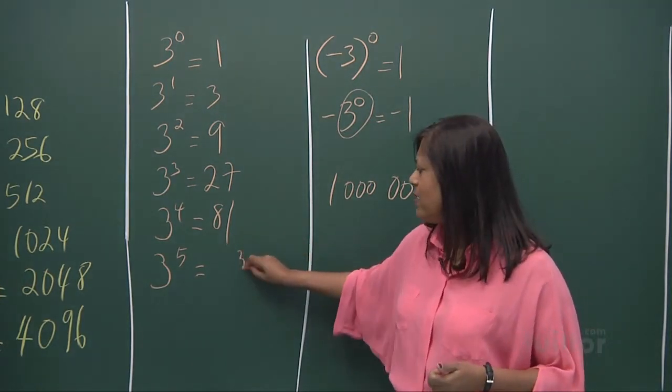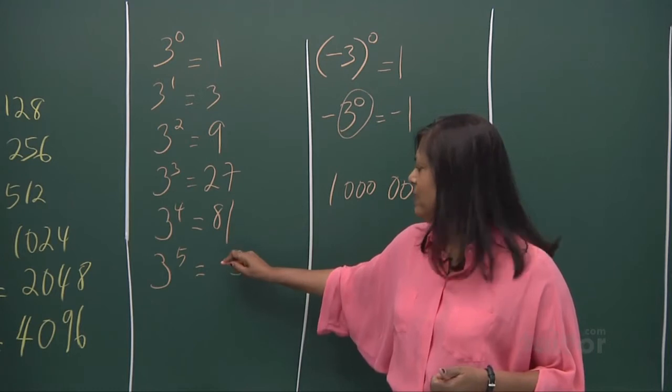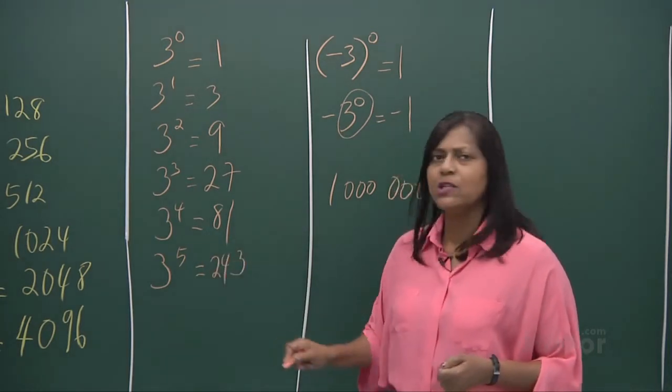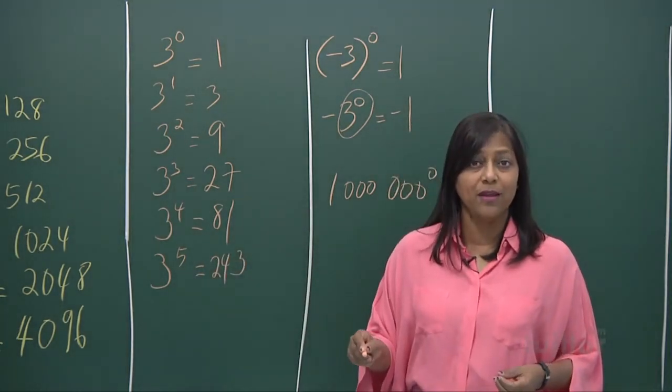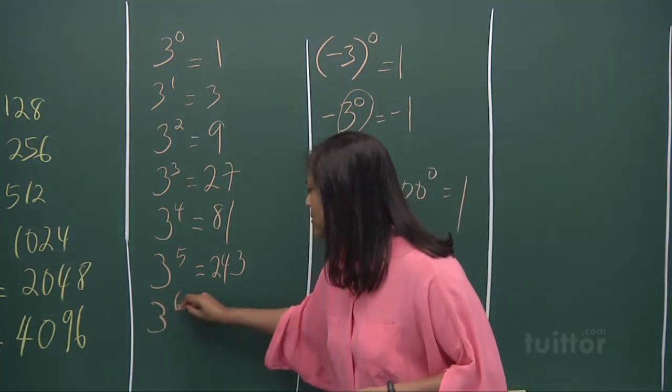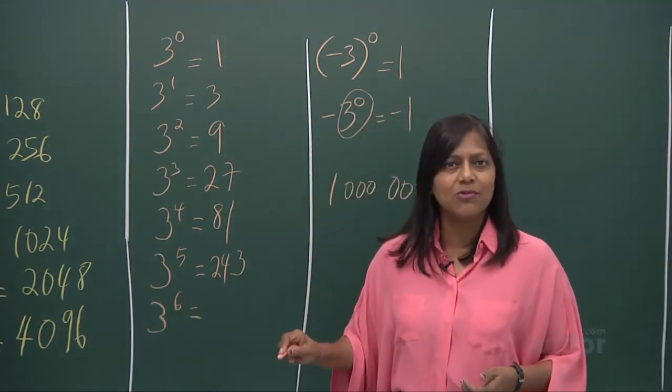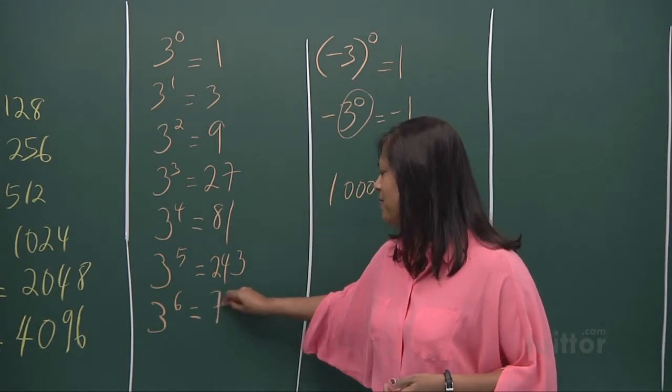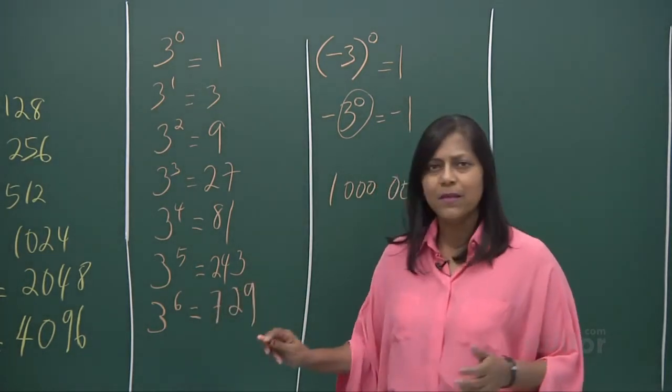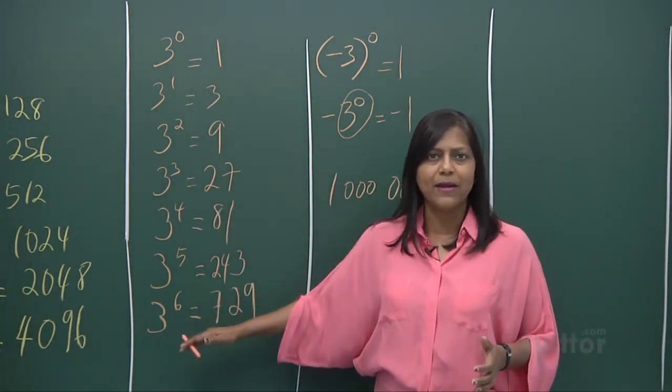And 3 to the power of 5, 81 times 3. Just look at it very easily. 3 times 1, 3. 3 times 8, 24. So you've got a 243. 3 to the power of 6, well, 243 times 3, you get a 729. It's very comfortable going right up to here.